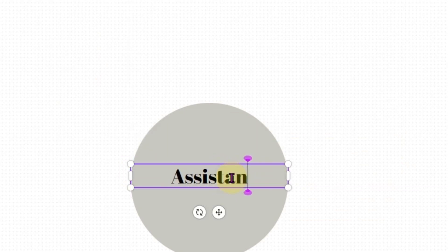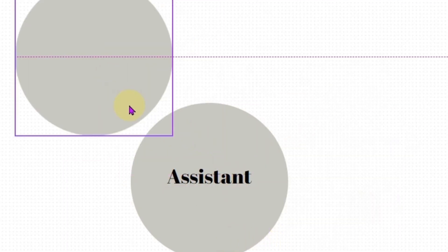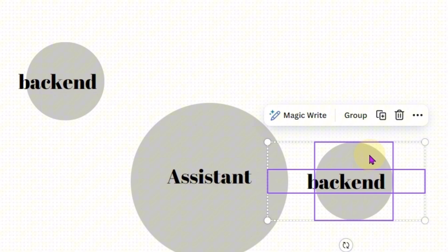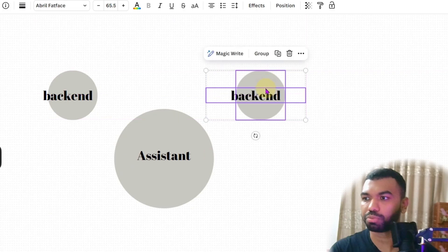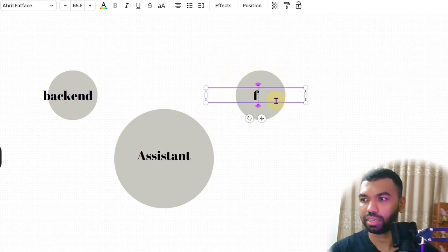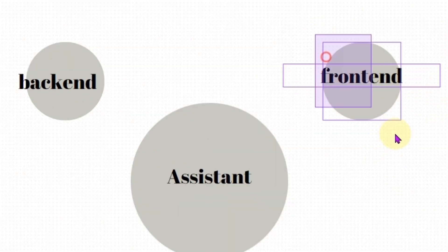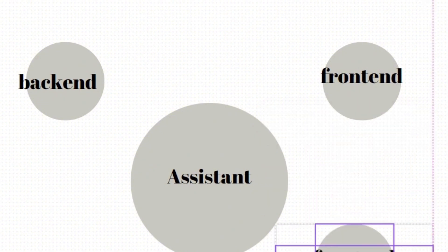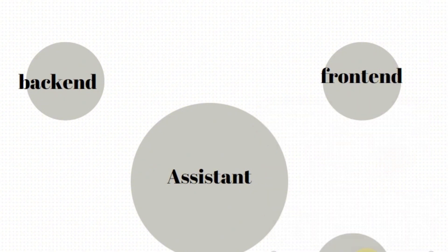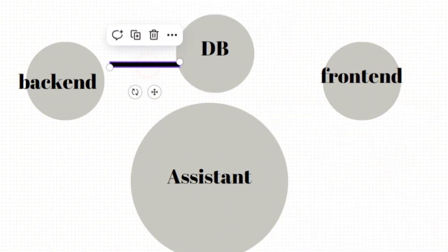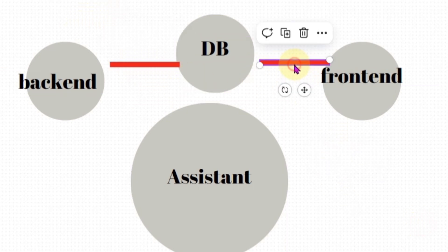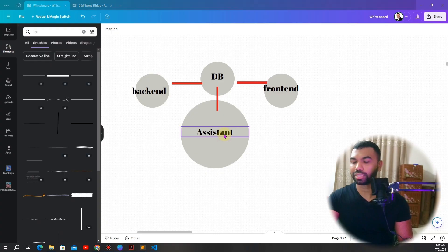Imagine you have your assistant connected to a backend, which is then connected to a frontend. We're going to create a complete application that takes in users' information, stores it, logs them in, registers them, and so on. We need a database — let's call it DB — and the database is going to interact with the backend, the frontend, as well as the assistant.